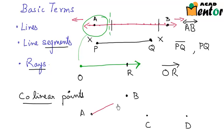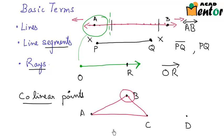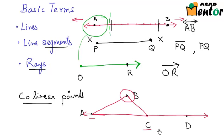I can draw a line through A and B, and also through B and C, but the same line does not pass through A. Also, if I have the line AC, it will not include point B. But if you extend line AC, we see that it also includes point D. So I can say that points A, C, and D are collinear while A, B, and C are not collinear.